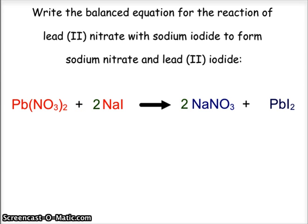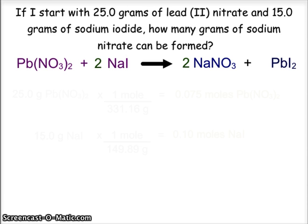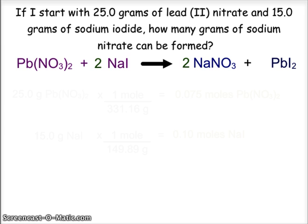Let's talk about limiting and excess reagents. We are told that we have 25 grams of lead nitrate and 15 grams of sodium iodide, and we want to know how many grams of sodium nitrate can be formed. If we have two reactants with two varying amounts, we need to first determine which amount is going to limit us.